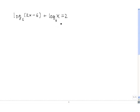So this side condenses as log base 6 of 2x minus 6 times x, and then we still have equal to 2.